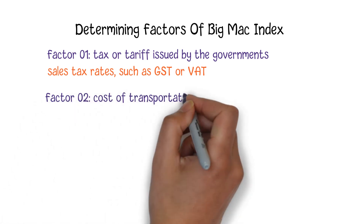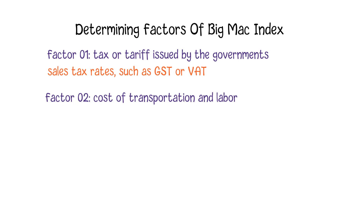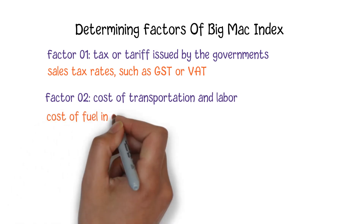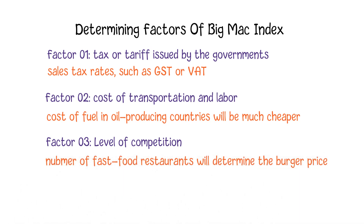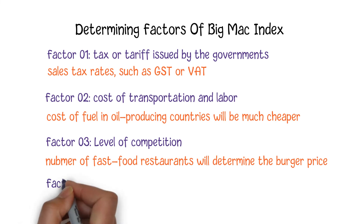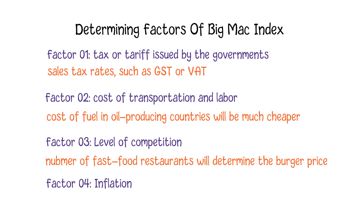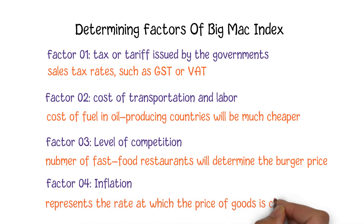The cost of transportation and labor is another factor for the final price of the burger. Different countries will have different labor costs. Also, the cost of fuel is different country by country — for example, for oil-producing countries, the petrol price will be much cheaper than other countries. Another important factor is the level of competition. If there are lots of fast-food restaurants around, the price of a burger might be low. Last but not least, the expected inflation of a nation's currency is also an important factor, as it represents the rate at which the price of goods is changing in that country.